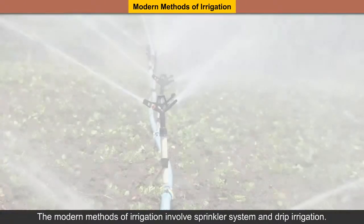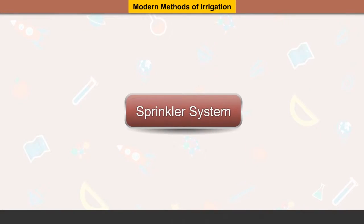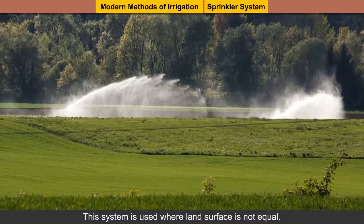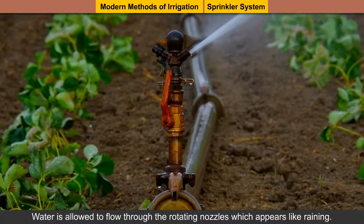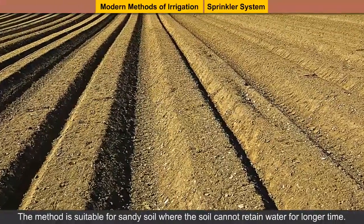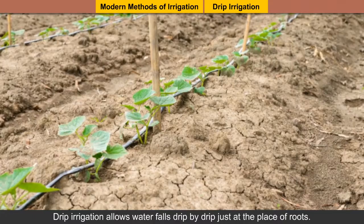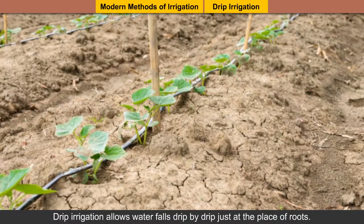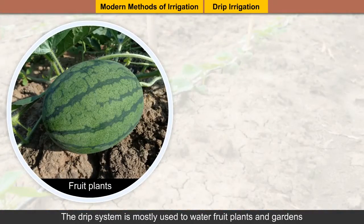Modern methods of irrigation: The modern methods of irrigation involve the sprinkler system and drip irrigation. These methods are more efficient in working and saving water than traditional methods. Sprinkler system: This system is used where the land surface is not equal. Water is allowed to flow through rotating nozzles which appears like rain. The method is suitable for sandy soil where the soil cannot retain water for longer time. Drip irrigation: Drip irrigation allows water to fall drip by drip just at the place of roots, so wastage of water does not occur. The drip system is mostly used to water fruit plants and gardens.